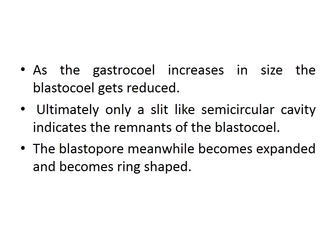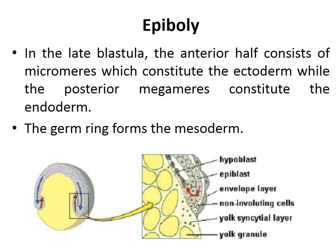If there are two cavities it is the gastrula stage; one cavity indicates blastula. In epiboly, the animal pole cells divide faster because yolk content is less. In the late blastula, the anterior half consists of micromeres forming the ectoderm, while the posterior megablastomeres containing yolk become the endodermal cells.